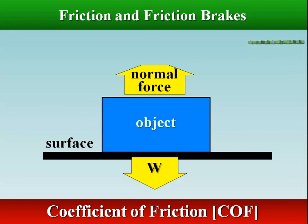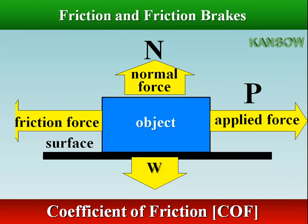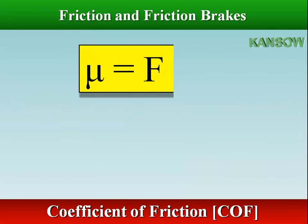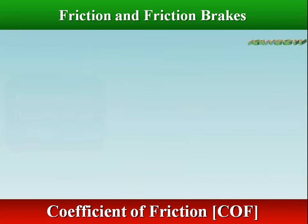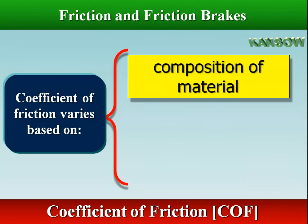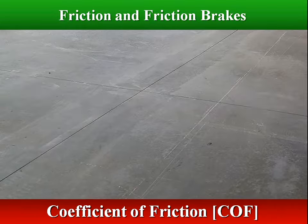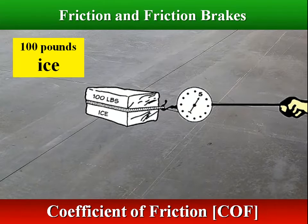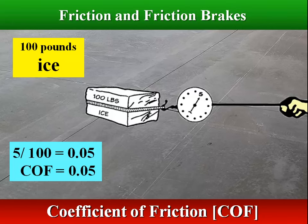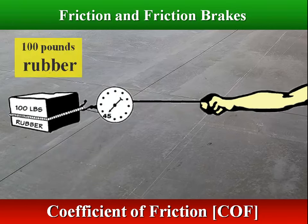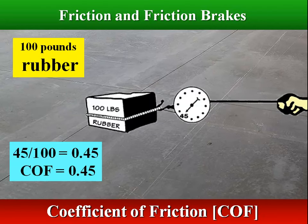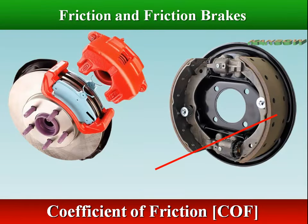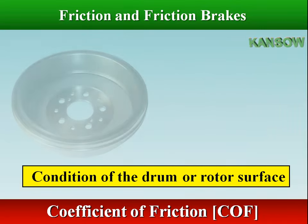Friction is always measured for pairs of surfaces using what is called a coefficient of friction. A low coefficient of friction for a pair of surfaces means they can move easily over each other. The coefficient of friction varies based on the composition of material and condition of the surface. For example, 100 pounds of ice pulled across a concrete floor may require only 5 pounds of force to move. In a brake system, the coefficient of friction varies on the type of lining used and the condition of the drum or rotor surface.